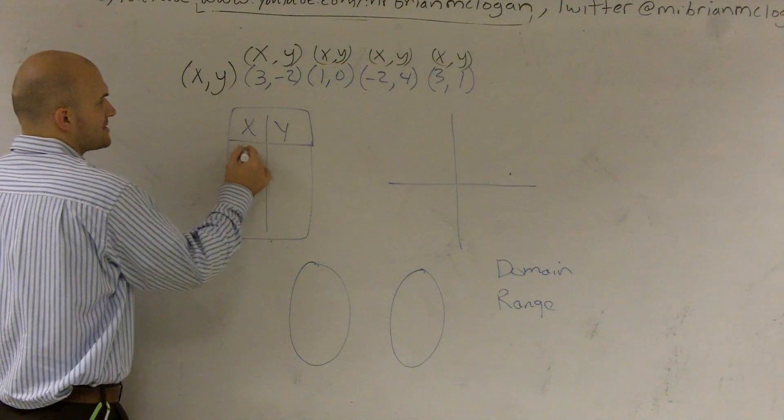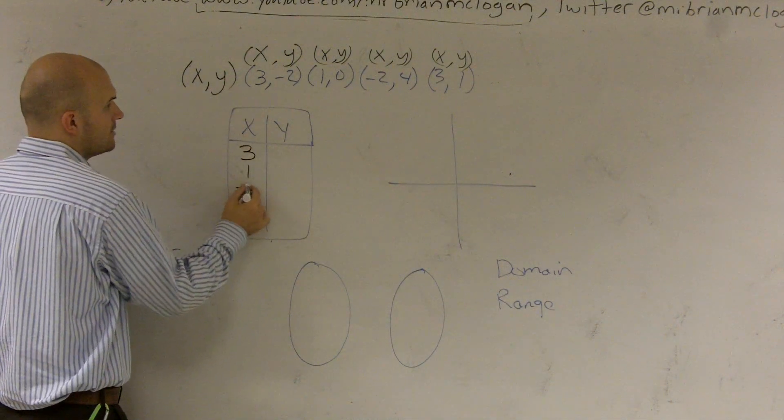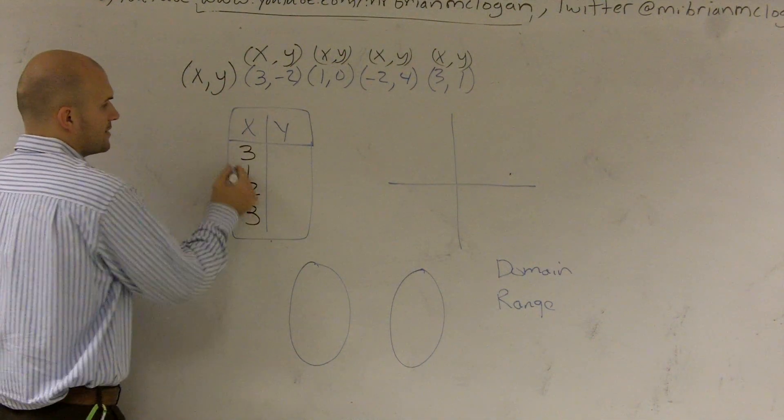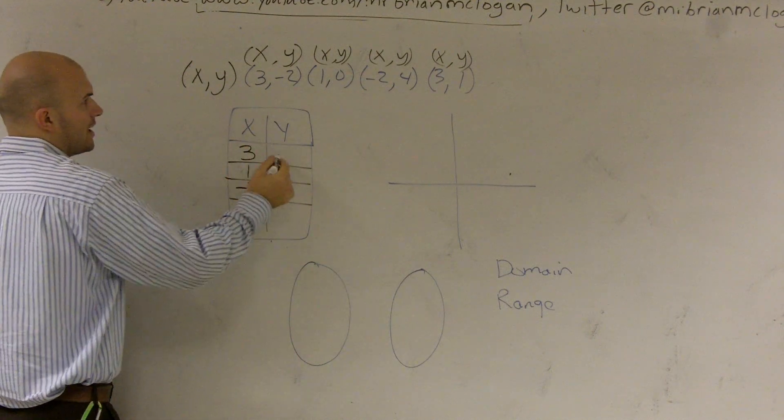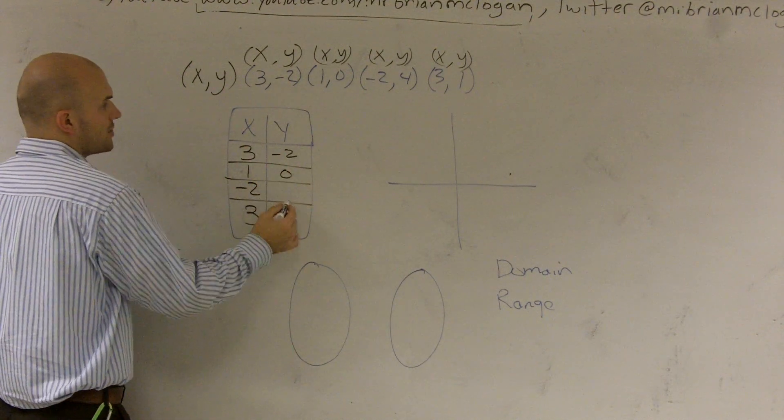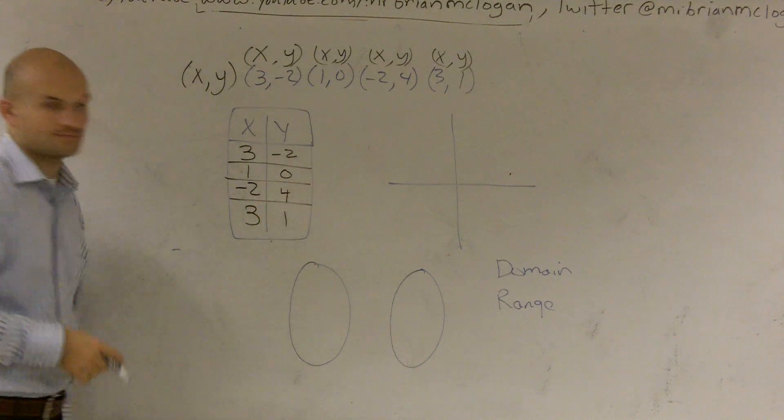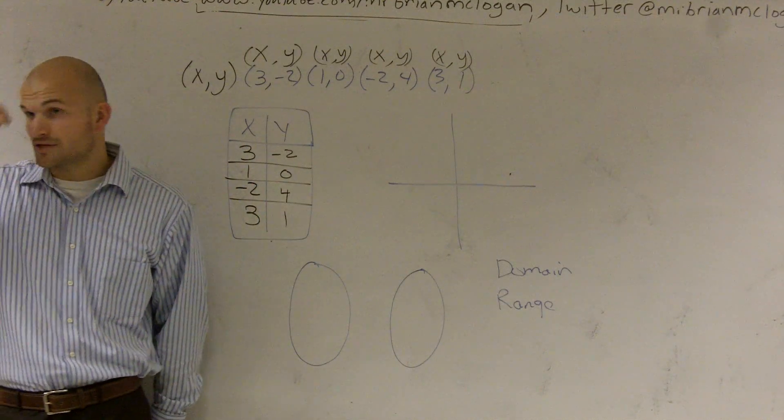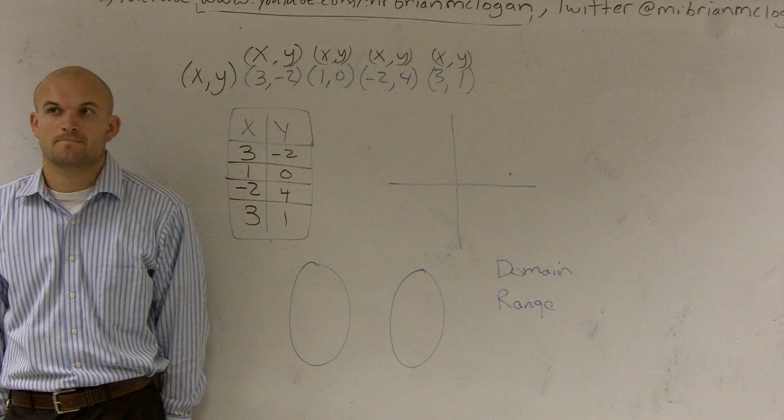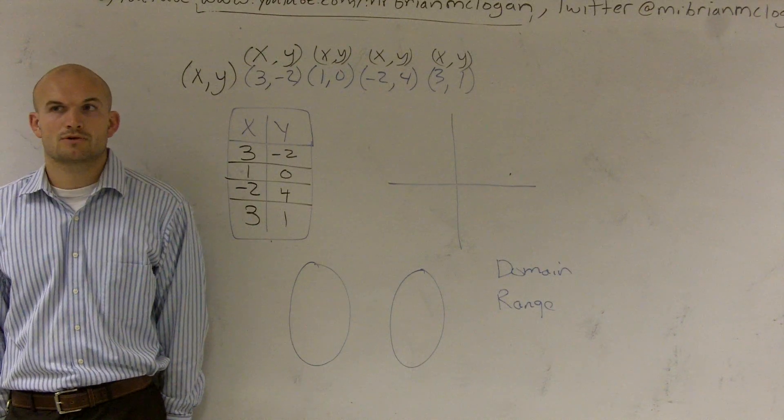I'm going to do the exact same thing. I'm just going to plug in all my X's. So that would be a 3, a 1, a negative 2, and a 3. And then over here I'll have a negative 2, a 0, 4, and a 1. That's what you do for that.